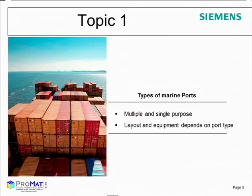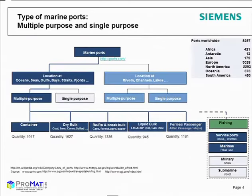Topic one: types of marine ports. I will talk about multiple purpose ports and single purpose ports and also a bit about the layout of ports. We have two types of ports: inland ports, located next to rivers, and sea ports located at harbors. We differentiate between multiple purpose ports and single purpose ports. Single purpose ports deal with just one commodity.